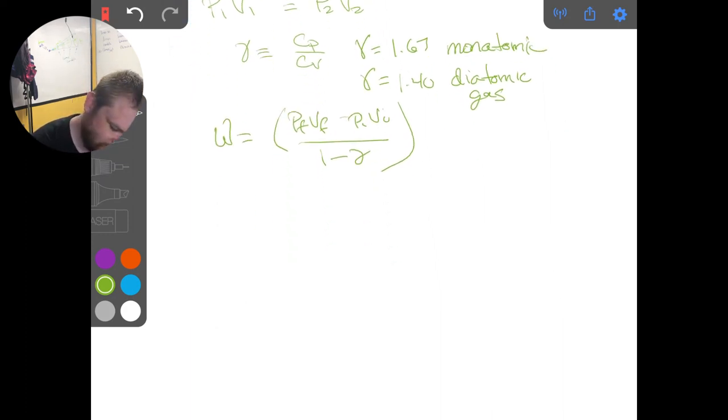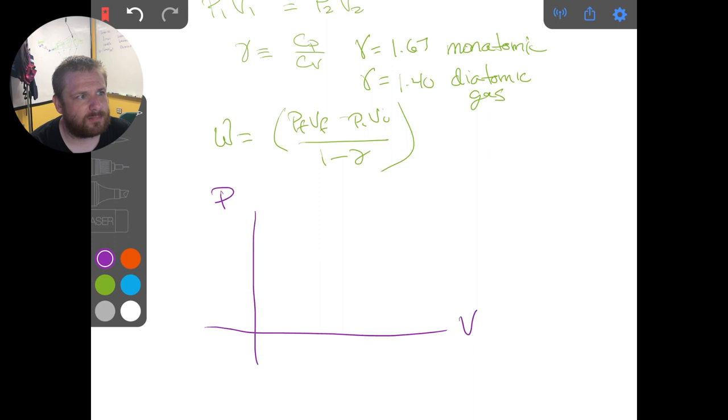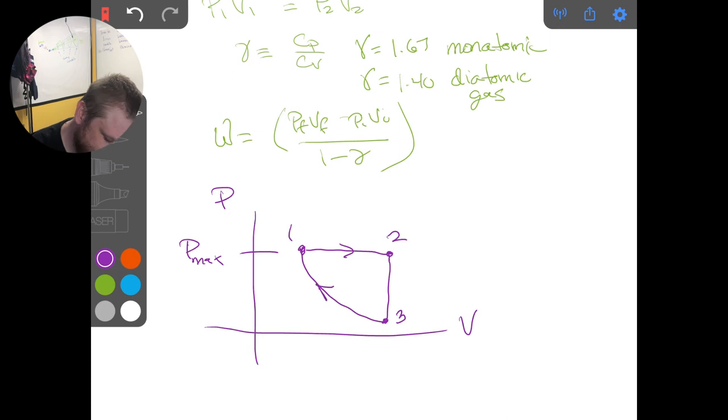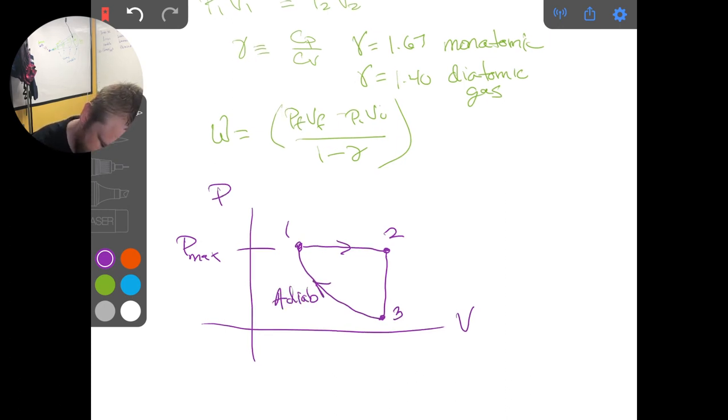We have a cycle and it starts at some P max here. And we have our states 1, and we'll go over here to 2, and straight down to 3. We have an adiabatic process that brings us back to 1. This here is 600 cubic centimeters, and this is 100 cubic centimeters, and pressure 3 down here is 100 kilopascals.